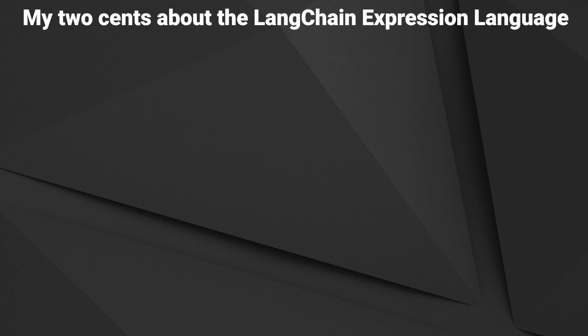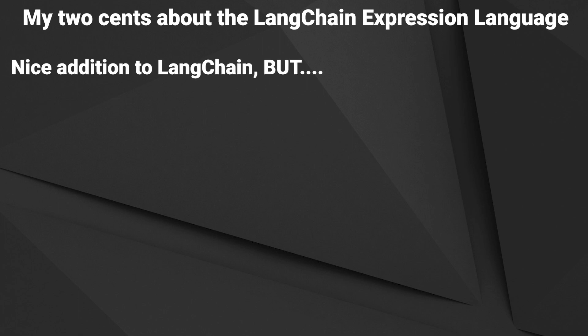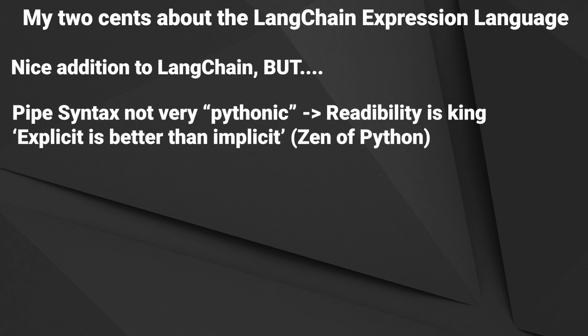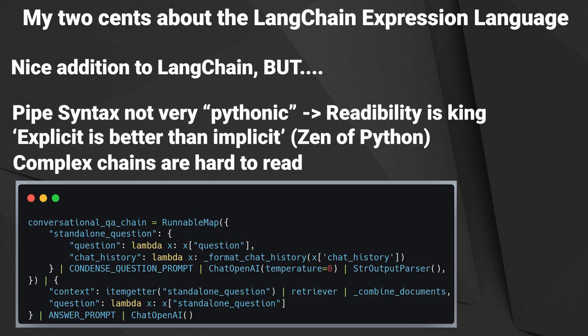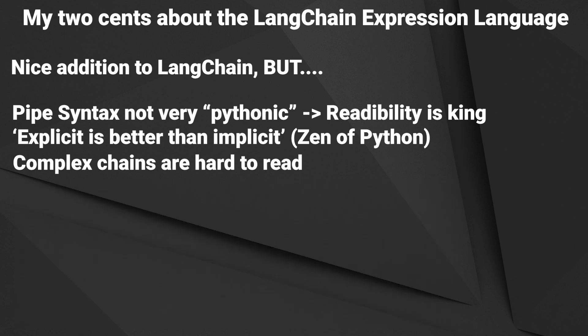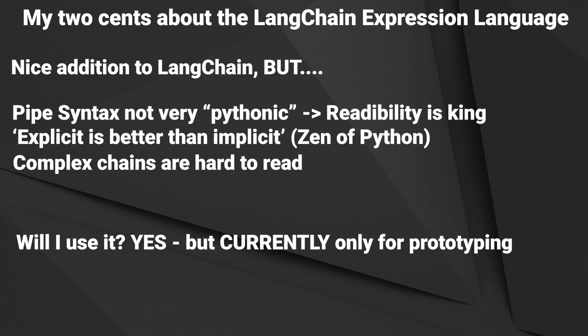That was the code. Now my two cents about this new topic. In general, it's a nice addition, but I have some cons against it. It's another abstraction layer which makes the code far less Pythonic, and readability is king, especially in Python. More complex chains can become quite unreadable — can you identify what's going on here? For me it's quite hard. With classes and methods it's easier to grasp. So would I use it? Probably yes, but only for prototyping. For production-ready code and more complex chains, I'll probably stick to the old way. But of course that's only my opinion. Let me know in the comments what you think about the new LangChain Expression Language. If you liked the video, give it a thumbs up and subscribe to my channel. Thank you very much.